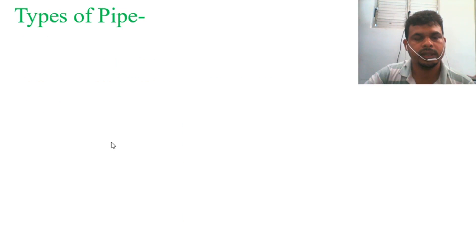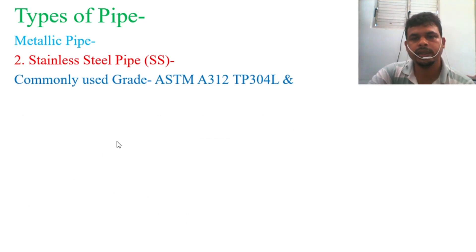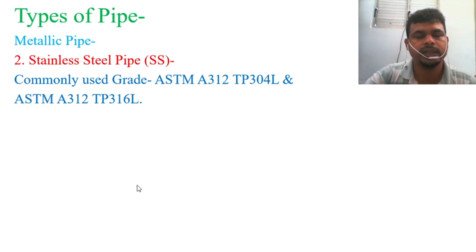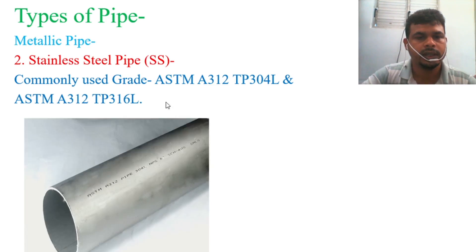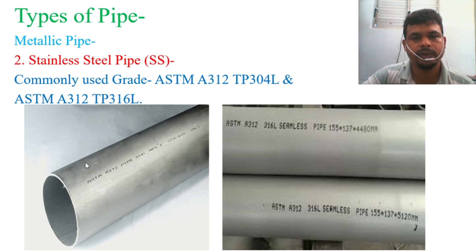Next is stainless steel pipe. Stainless steel pipe commonly uses grades ASTM A312 TP304L and ASTM A312 TP316L. I am highlighting only the commonly used pipes here — if you visit ASTM, you will find many more grades available. In the photo, you can see the marking ASTM A312 S304L. If you see this type of marking, you will be able to identify it as a stainless steel pipe.